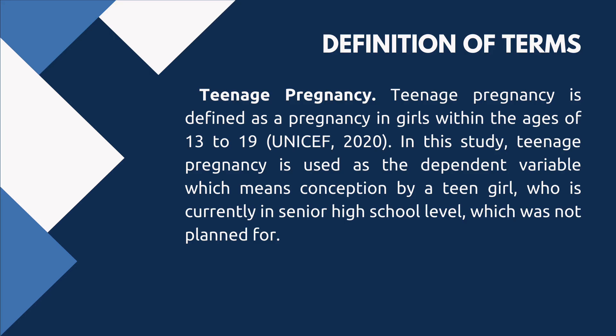In this study, SHS learners are the respondents from Crystal Ray High School. Teenage pregnancy is defined as a pregnancy in girls within the ages of 13 to 19 (UNICEF 2020). In this study, teenage pregnancy is used as the dependent variable, which means conception by a teen girl, especially one who is currently enrolled in senior high school, which was not planned.